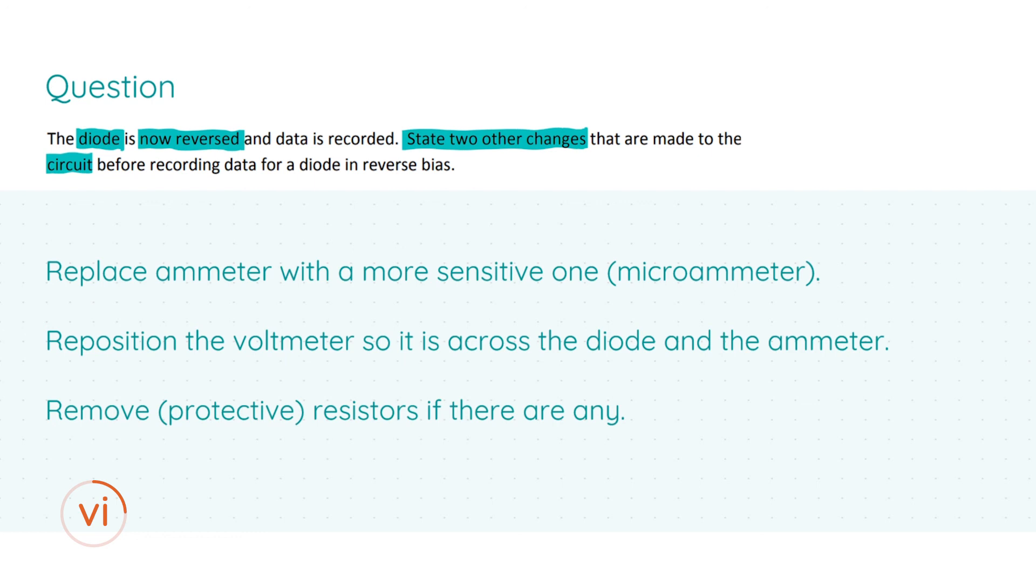The first one is that you are to replace an ammeter with a more sensitive one—in this case a microammeter. In our diagram I put in a milliammeter; a microammeter is much more sensitive because it can sense smaller currents. This is done as when in reverse bias there will be a high resistance due to the large depletion layer within the semiconductor, and therefore there'll be less current flowing through the circuit, so we need a much more sensitive instrument.